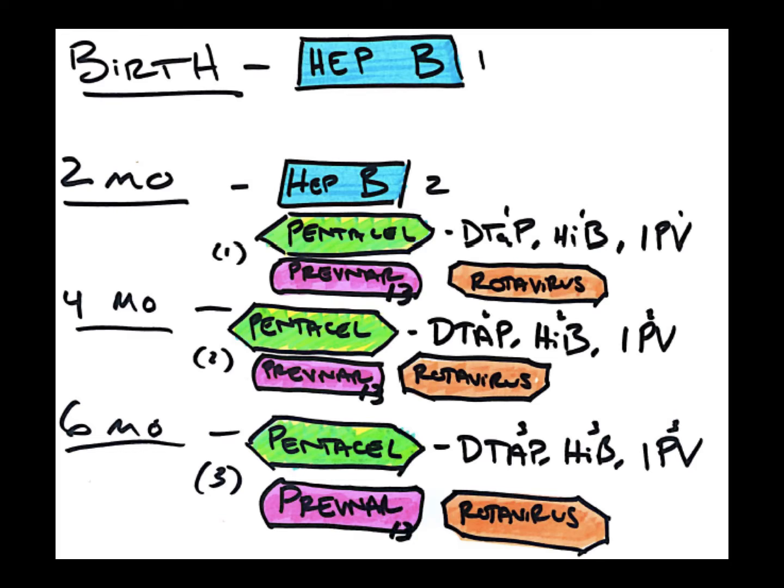Anyway, so it's Pentacil, Prevnar, and Rotavirus, three times over at two, four, and six months. And then that's it for the first six months.